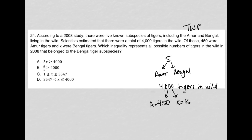Which inequality represents all possible numbers of tigers in the wild in 2008 that belonged to the Bengal tiger subspecies? We know there are a total of five subspecies, and Bengal tigers are just one out of those five. So one-fifth represents the ratio of Bengal tigers to all subspecies. Since there are 4,000 tigers in the wild, one over five should equal X over 4,000 — but that's really only if they're evenly distributed, and they're obviously not because we have 450 Amur tigers.